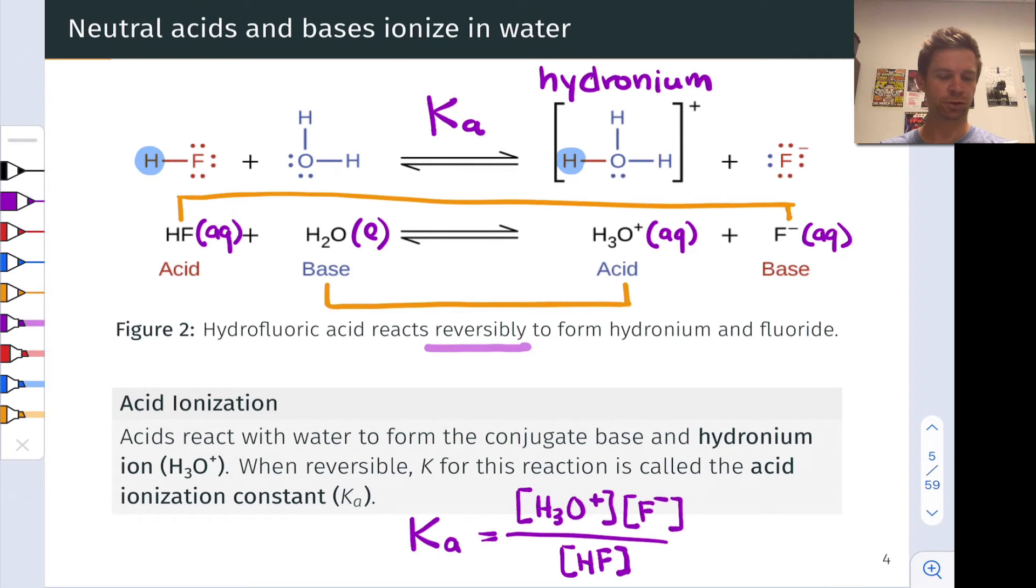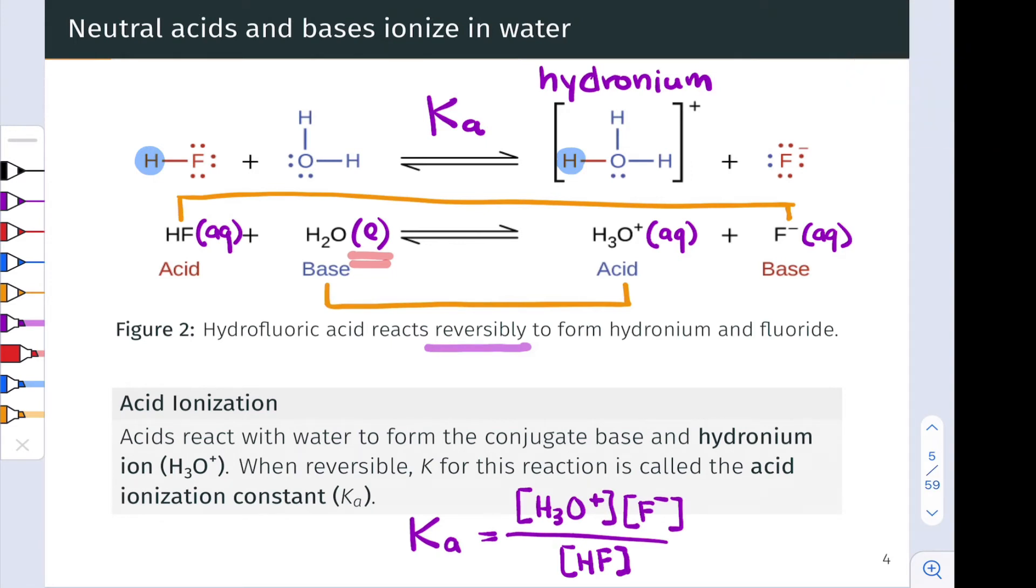And why is water omitted? Well, notice it's a pure liquid in the chemical equation. And as a pure liquid, just as we would in reaction quotients back a couple of chapters ago, we're going to omit that from the reaction quotient and the equilibrium expression. And so this ratio at equilibrium is K-A. And this gives us a sense of how strong the acid is. The larger this value, the stronger the acid, because the further to the right, the further toward products, this reaction goes at equilibrium.